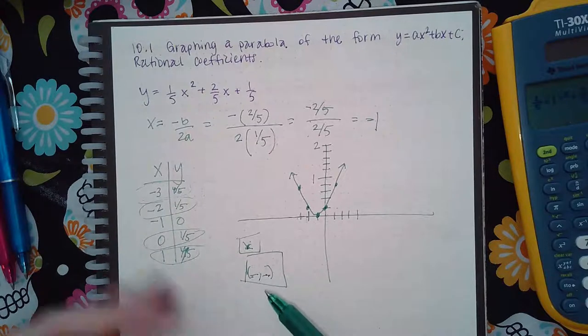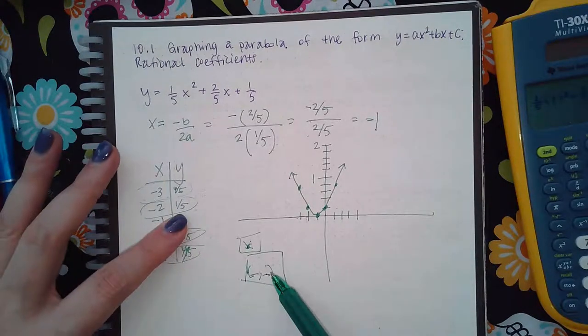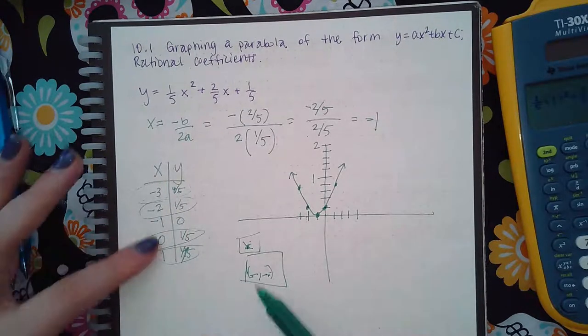Then keep it open. Type in negative 2 and 1 fifth. Click plot. Go ahead and do this one also.